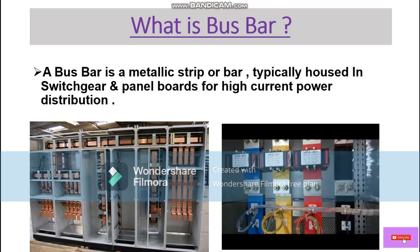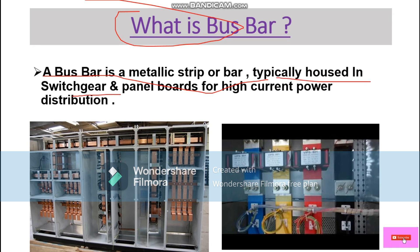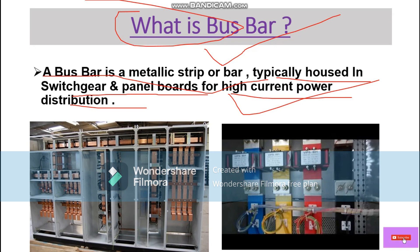So basically, what is a bus bar? A bus bar is a metallic strip or bar typically housed in switchgear and panel boards for high power distribution, due to the high current power involved. There are two types of metal used to make the bus bar: one is copper and another is aluminium.